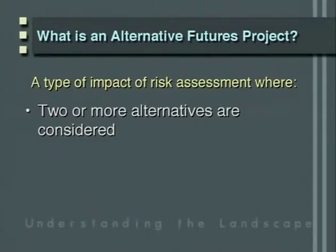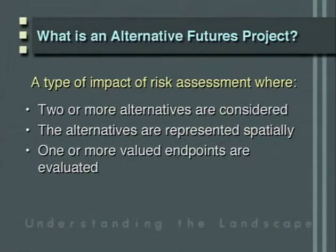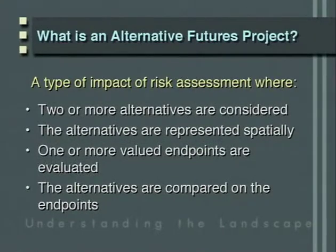What is an alternative futures project? Simply put, it's a type of impact or risk assessment where two or more alternatives are considered, and importantly, the alternatives are represented spatially — they're mapped in quite precise ways. One or more things that people care about are evaluated for the effects that these alternative futures would have. Examples include the dollar value of commodity production, the effects on terrestrial or aquatic wildlife, and the amounts and distribution of water use. The alternative futures are then compared and contrasted for the effects they have on these things people care about.